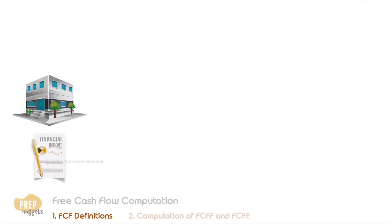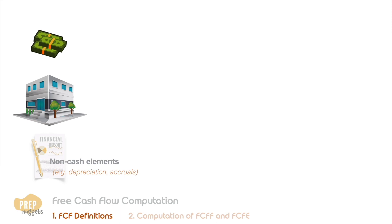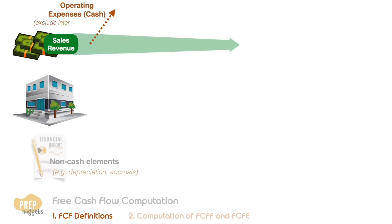Let's forget for a while all about financial reporting, which accounts for several non-cash elements like depreciation and accruals, and just view the company in terms of the cash inflows and outflows. When the company makes a sale, cash flows in. There are cash operating expenses like salaries and rent, but this should not include interest expense as it is a financing cash flow. Part of the income is taxed, so cash taxes leave the company.